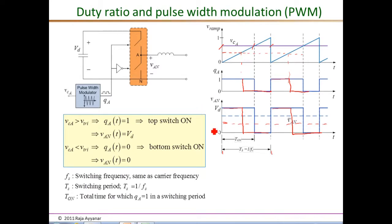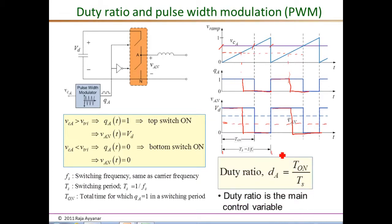An important parameter is the duty ratio. The duty ratio for pole A, D_A, is defined as T_on — the duration for which Q is one within one switching period — divided by T_S. The duty ratio is the main control variable used to control various objectives in switch mode power converters.